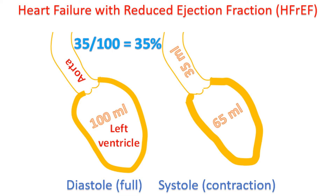It initially manifests as an abnormal relaxation of the heart, or heart failure with preserved ejection fraction. Ejection fraction is the fraction of the blood pumped out by the heart after full filling during relaxation after a contraction. In later stages of diabetic cardiomyopathy, the pumping function is affected and heart failure with reduced ejection fraction occurs.